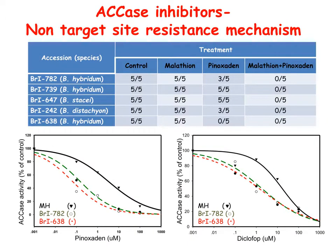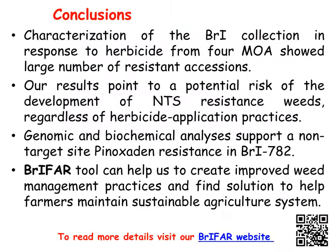Pre-treatment with malathion resulted in high sensitivity of the phenoxidin-resistant accessions. Genomic sequencing of the ACCS gene showed no known mutations in the resistant accessions. Enzyme activity assay suggests the involvement of a non-target site resistant mechanism.